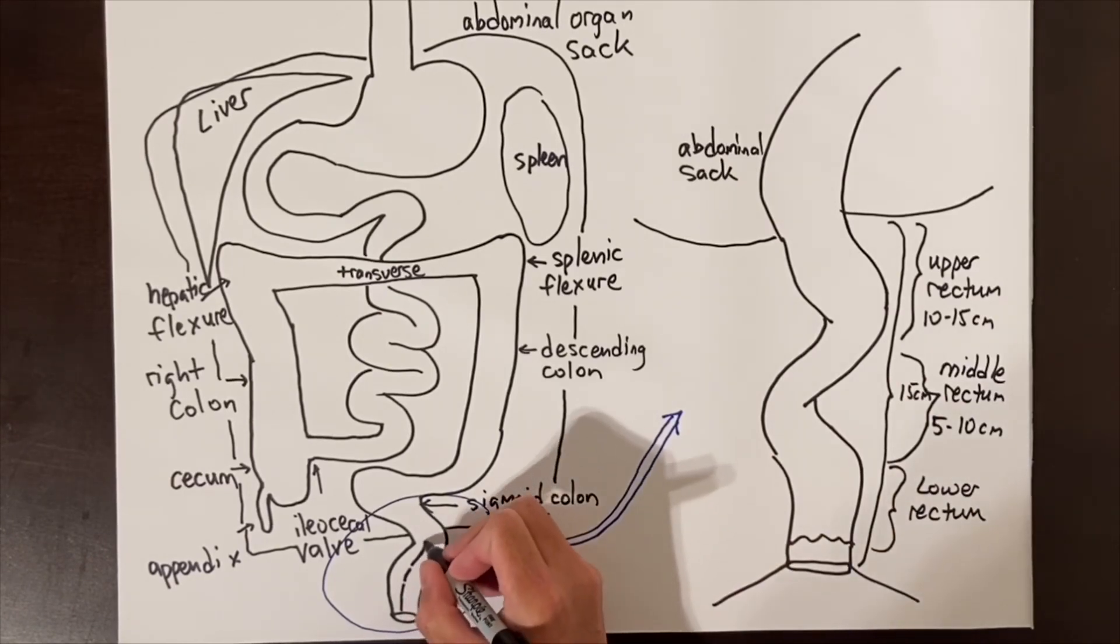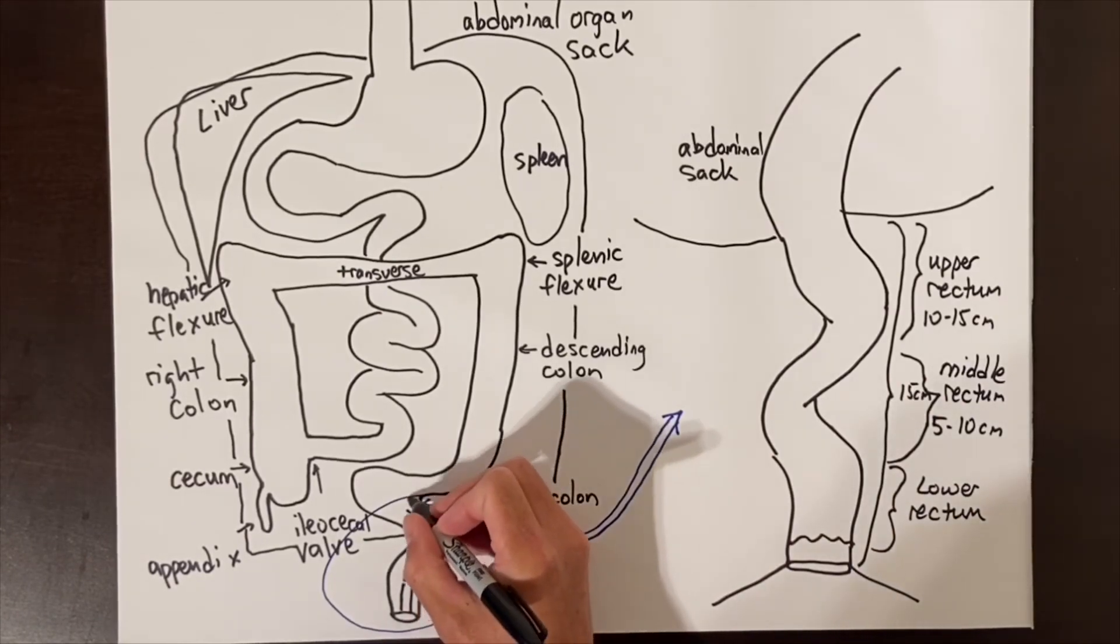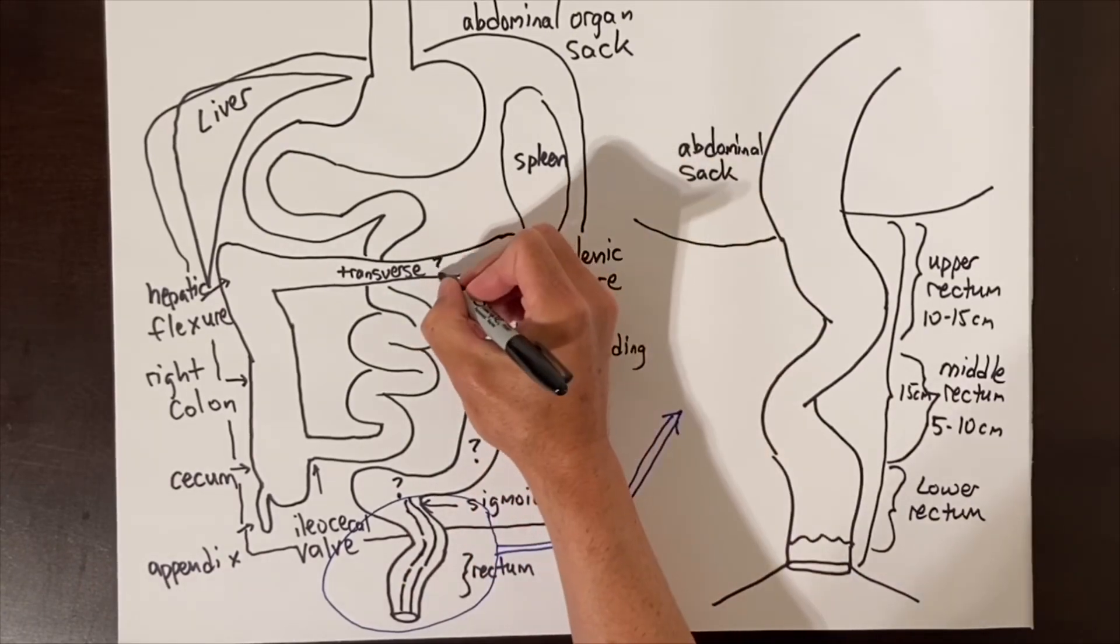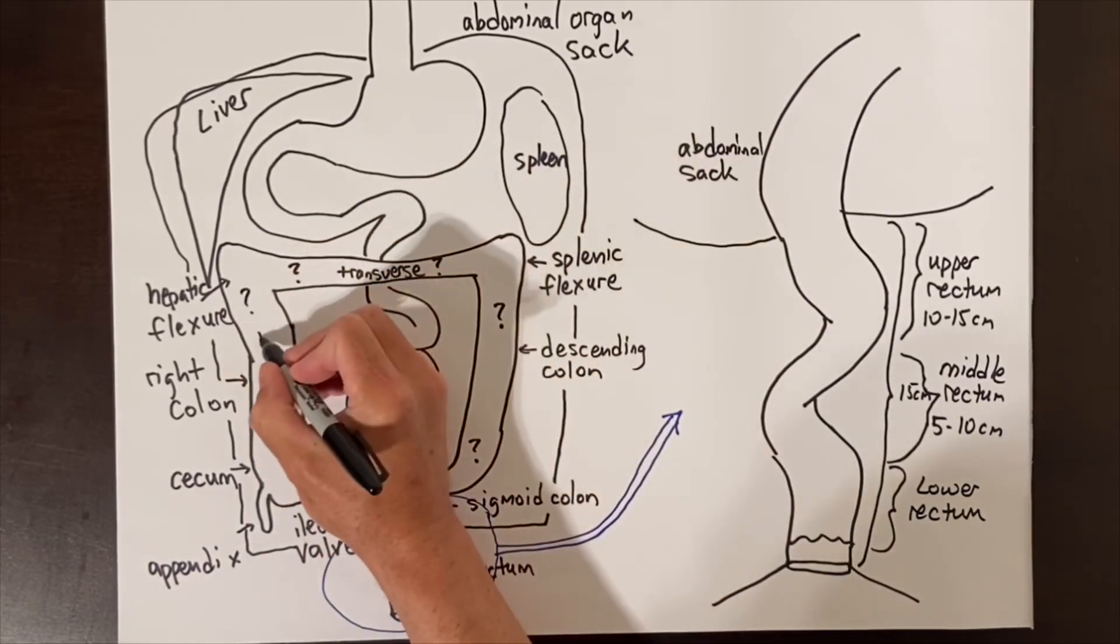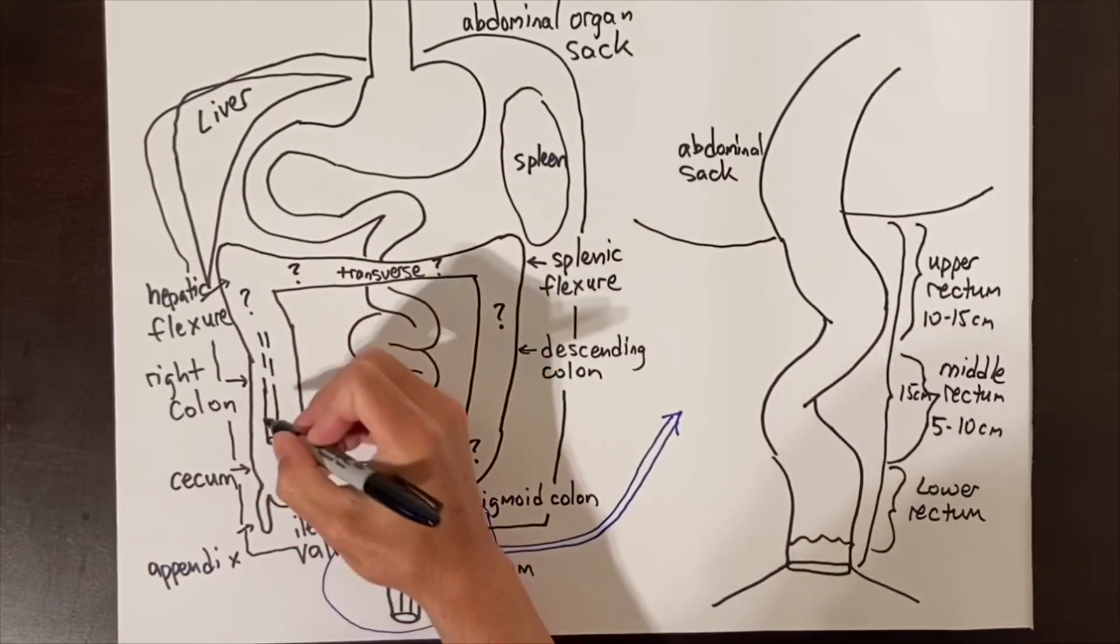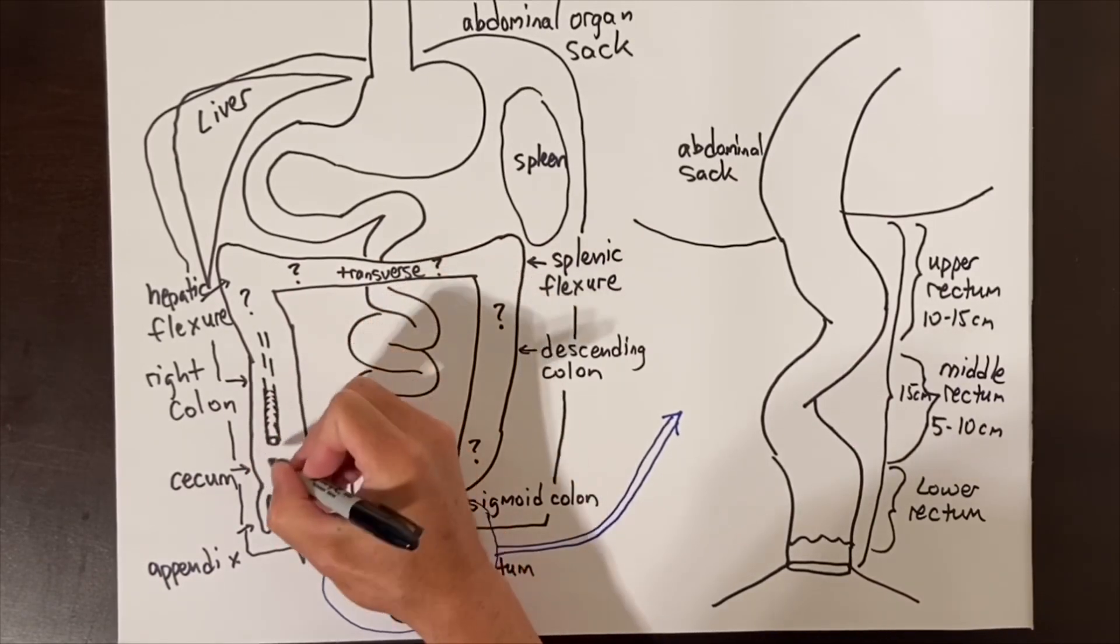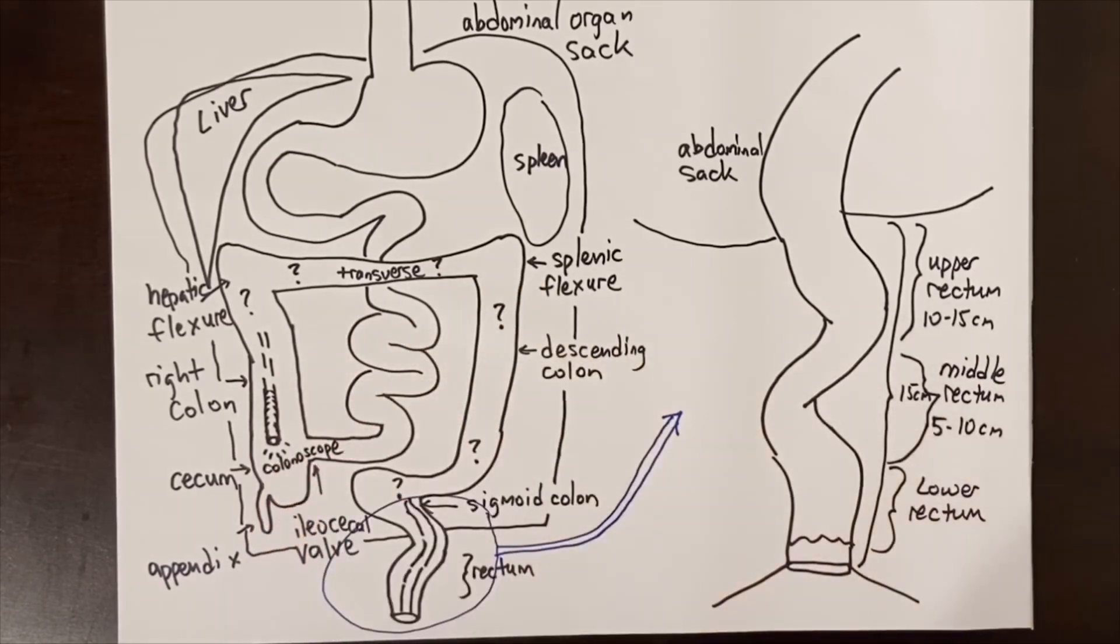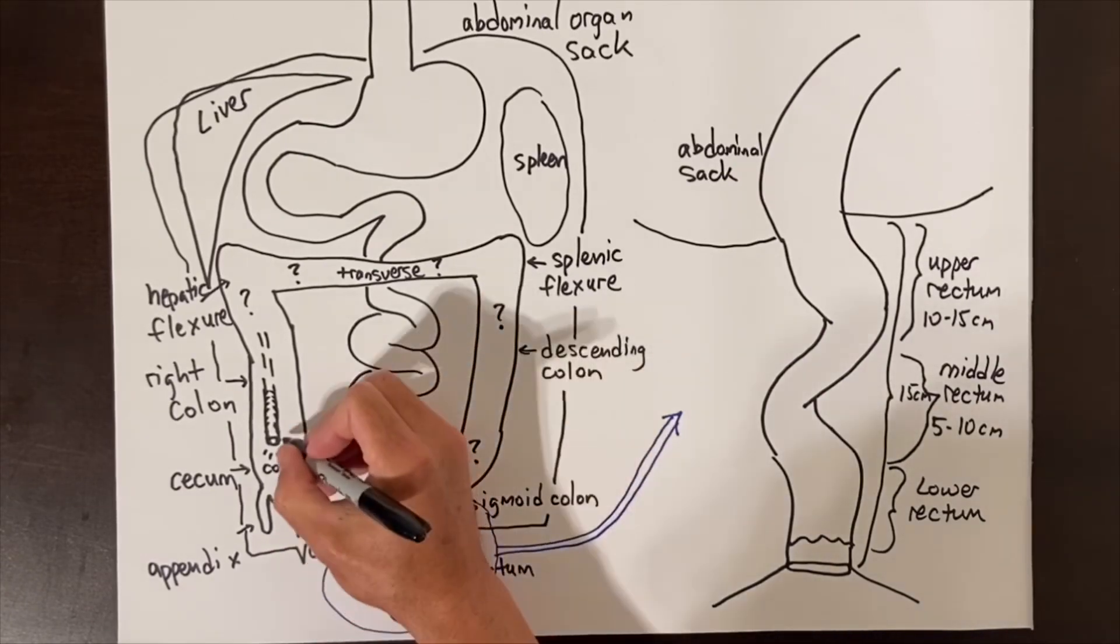When you get a colonoscopy, it is easy to tell the distance from the anal opening for the first 20 centimeters or so, but after that, locating where you are in the colon is tricky. We can tell somewhat where we are from inside the colon at the turns of the splenic flexure and hepatic flexure, but we don't really know where we are again until we see the junction between the small intestine and the colon, again called the ileocecal valve.